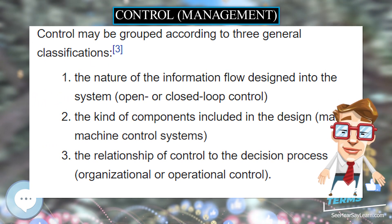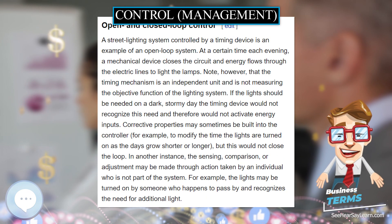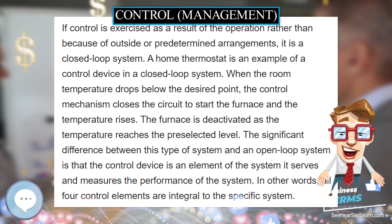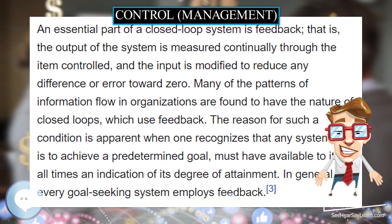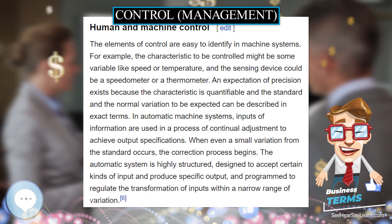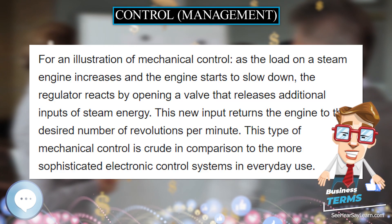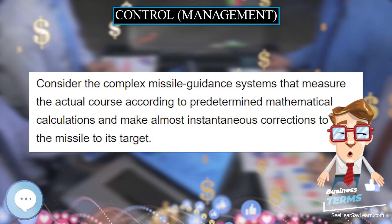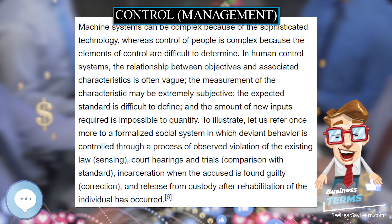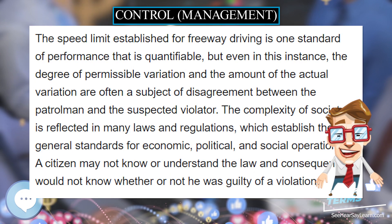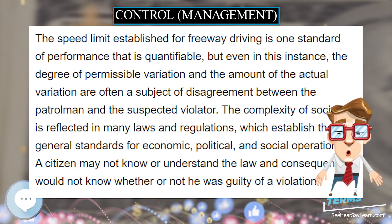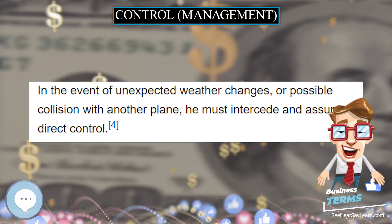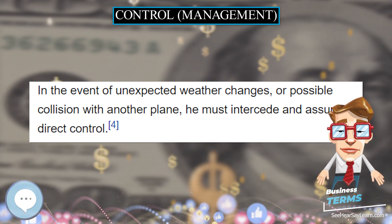Human and machine control: the elements of control are easy to identify in machine systems. The characteristic to be controlled might be some variable like speed or temperature, and the sensing device could be a speedometer or a thermometer. An expectation of precision exists because the characteristic is quantifiable and the standard and normal variation can be described in exact terms. In automatic machine systems, inputs of information are used in a process of continual adjustment to achieve output specifications. The automatic system is highly structured, designed to accept certain kinds of input and produce specific output, programmed to regulate the transformation of inputs within a narrow range of variation.